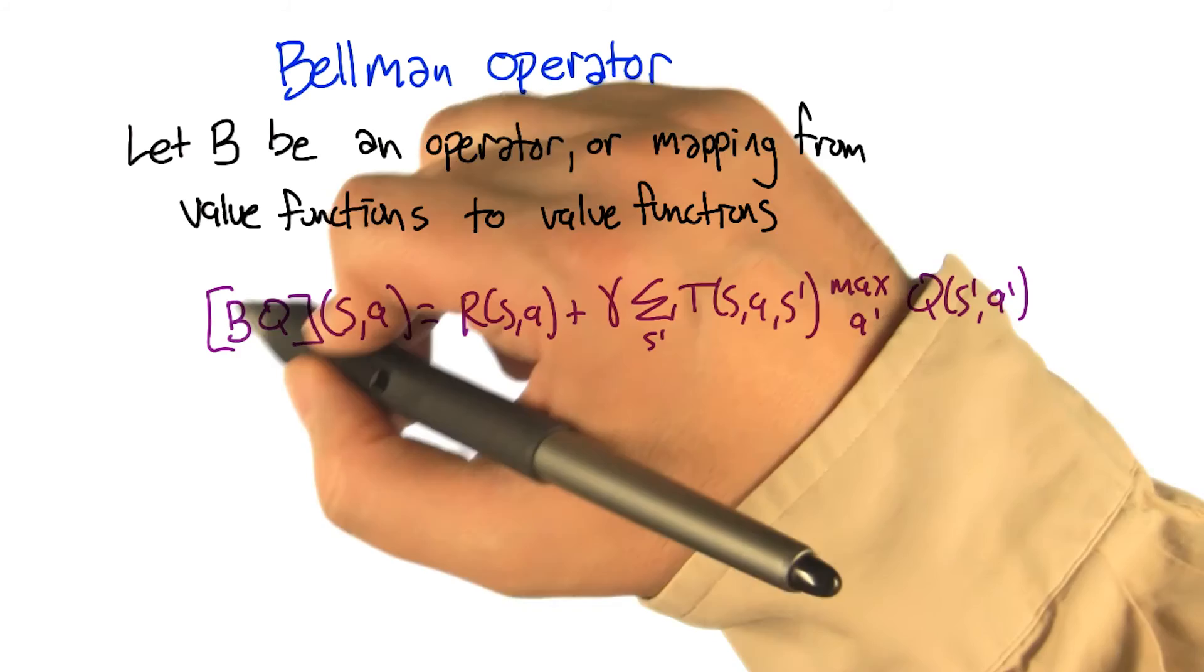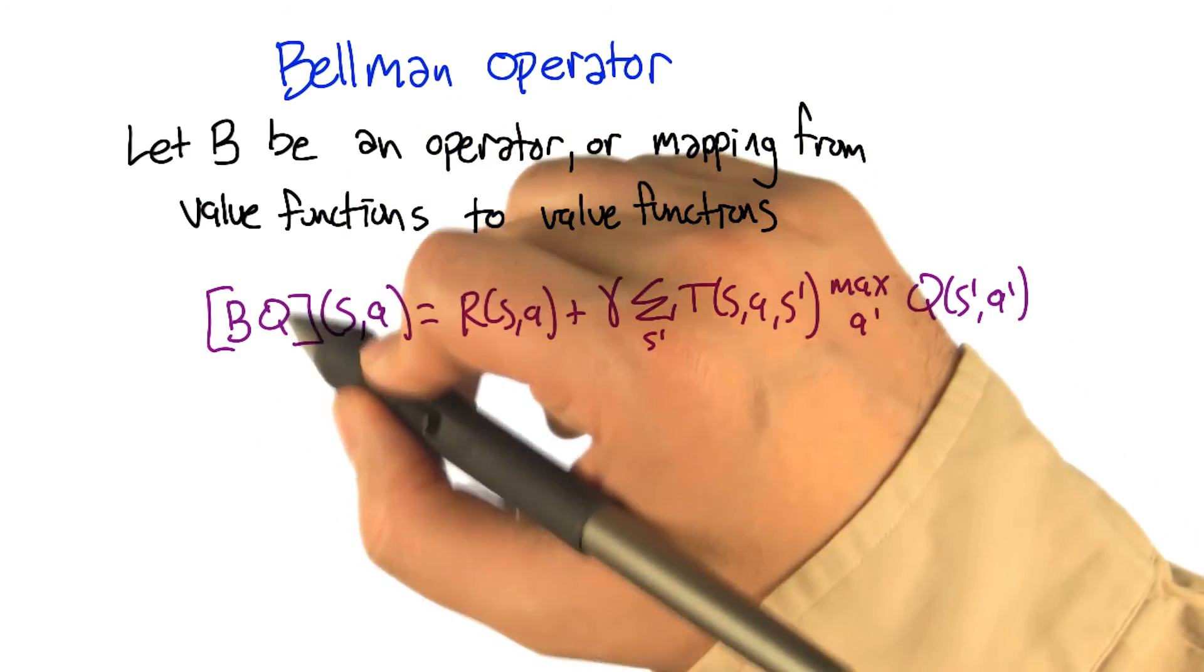So Q goes in, BQ comes out, BQ is a new value function, a new Q function.